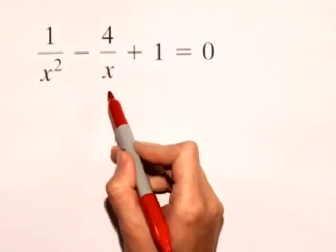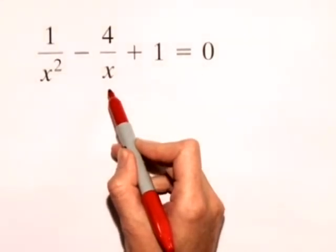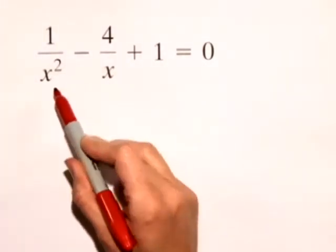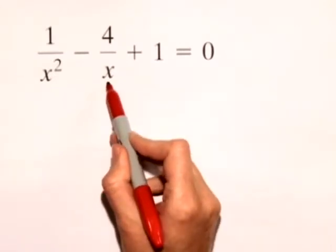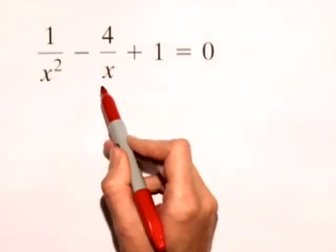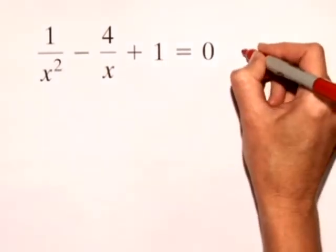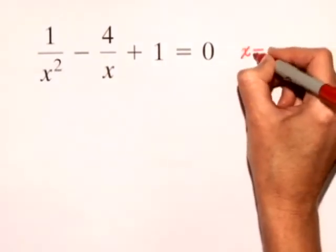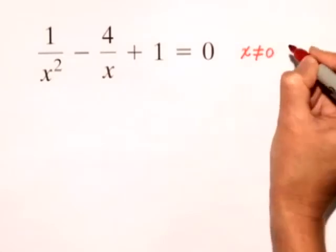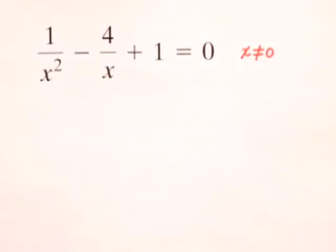Since this is a rational equation, we want to first write our restricted values. Notice, if I let x equal 0 in either one of these denominators, then I would get 0 in the denominator, and we cannot divide by 0. So we want to make sure that we note our restriction that x cannot equal 0 in our solution set.